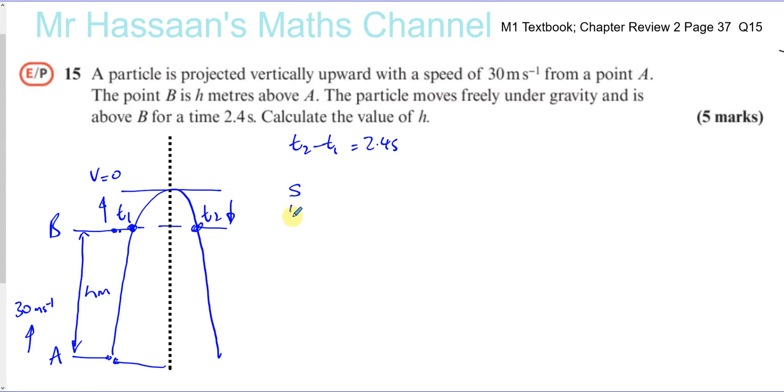So we can use SUVAT. So S we don't know. U is 30 and V is zero. I'm going to take up as positive, seeing as it was projected upwards. Therefore, A will be minus 9.8. And T is what I want to find, the time to the top of the flight.